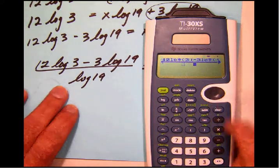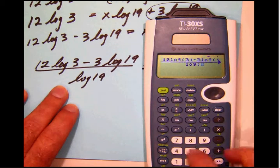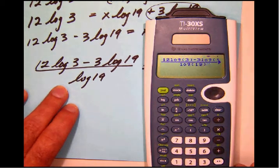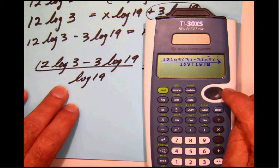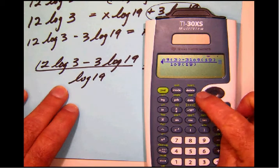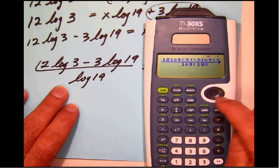Okay, on the bottom we'll have log 19. So the worst mistake that we can make is simply enter something wrong. But it appears that we have successfully done that.